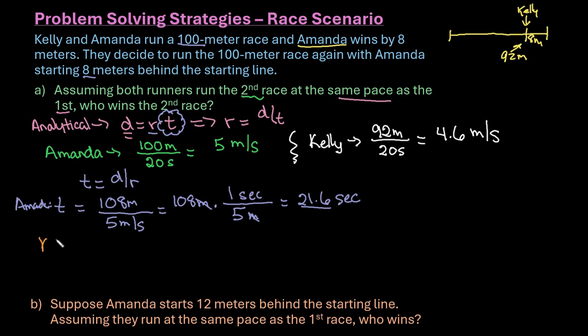We want to do the same thing for Kelly. Kelly is starting at the starting line, so she has a total of 100 meters. At 100 meters divided by 4.6, if you plug this into your calculator, you end up with 21.74 seconds. So it's going to take her slightly longer. Since this one is faster, we can say that Amanda will win the race.